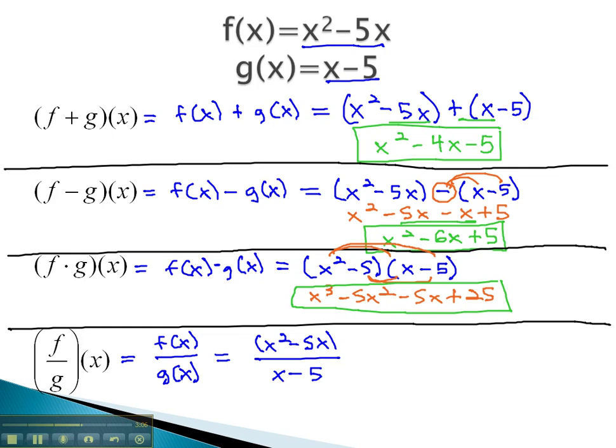As you recall, we cannot simplify a fraction unless we factor first. The numerator, we can factor out the greatest common factor of x to leave us with x minus 5. The denominator, x minus 5, does not factor. However, looking at this form, we can see the x minus 5's divide out, and we're just left with a simple answer, x.